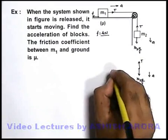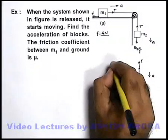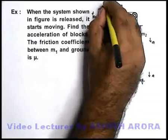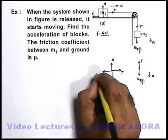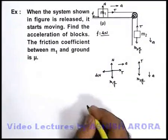For the block m1 we can say it will experience m1g in downward direction. Obviously a normal reaction N will act on it, which will balance the weight. Tension will be toward right and friction it is experiencing μN toward left, and it is also moving with an acceleration a.